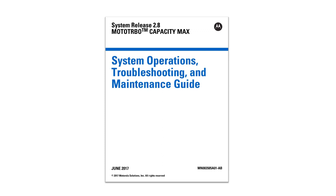Sometimes it doesn't work, or there are some problems you may encounter, or you may need to do some changes in the configuration. For that, there is the System Operations Troubleshooting and Maintenance Guide. It's also a useful document, though I don't use it very often. I'm mostly using the installation and configuration manual and sometimes the system planner.